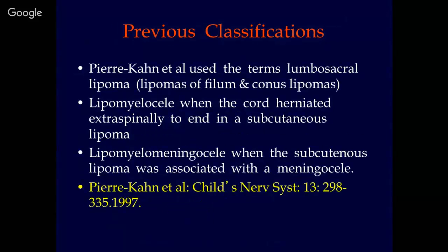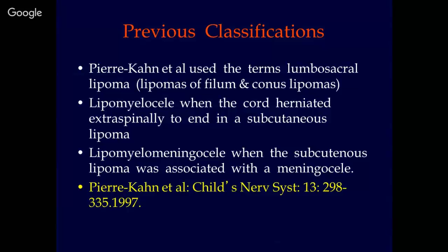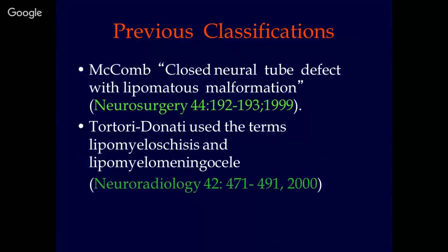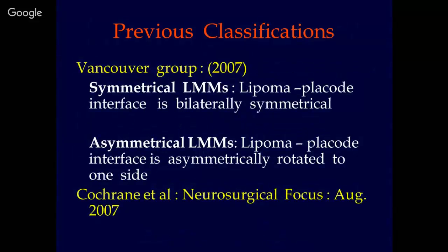Pherikhan from Paris used the term lumbosacral lipomas. He divided them into lipomas of the filum and conus lipomas. He also introduced two specific terms: lipomyelocele and lipomyelomeningocele, for which he provided the definitions. Lipomyelocele when the cord herniates extraspinally to end in a subcutaneous lipoma, and lipomyelomeningocele when the subcutaneous lipomas are associated with a meningocele. McComb used the term closed neural tube with lipomatous malformation, and Tortori-Donati from Italy used the term lipomyelomeningocele and lipomyeloschisis. The Vancouver group used the terms symmetrical and asymmetrical lipomyelomeningoceles based on whether the lipoma-placode interface was bilaterally symmetrical or asymmetrically rotated.